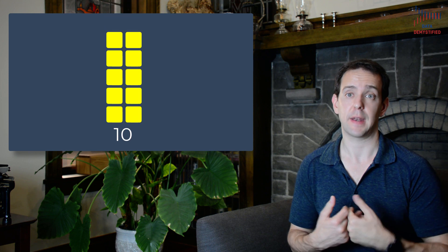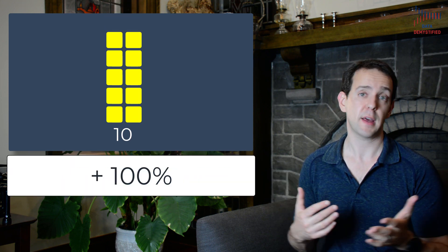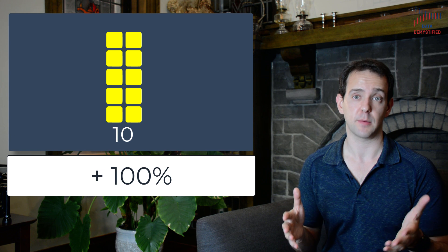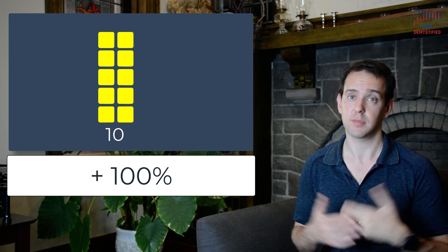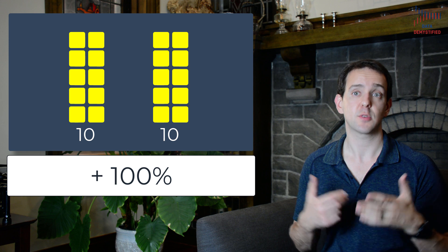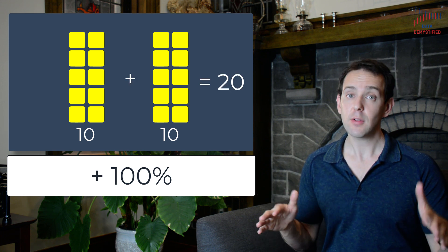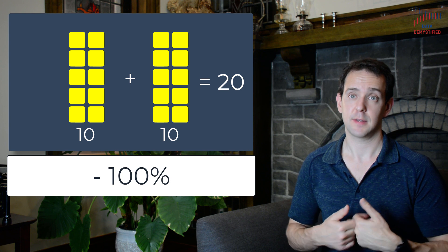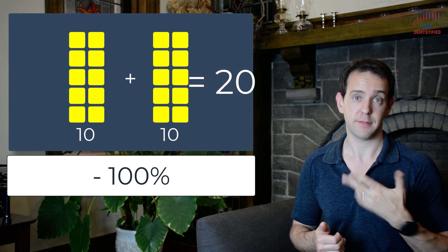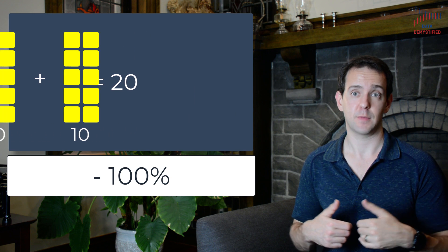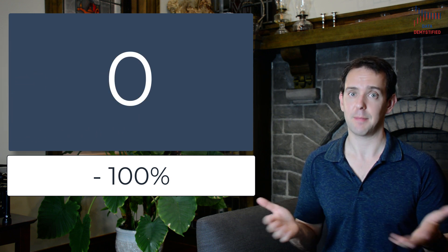Let's say I have 10 boxes and I increase the number of boxes by 100%. I just figure out how many boxes I have to begin with — 10 — then add 100% more. Well, 100% of 10 is just 10, so we now have 20 boxes. Now let's say I want to decrease the number of boxes by 100%. I just get rid of 100% of the 20 boxes, and I'm obviously left with nothing. So we already see very clearly that increasing a value by some percent and then decreasing by that same percent doesn't get us back to where we started, because the impact of a percent increase is not the same as a percent decrease.